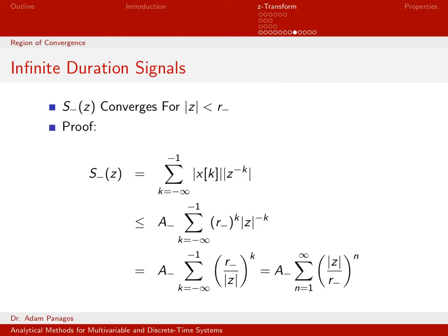Since n is negative k: when k is minus infinity, n is infinity; when k is minus 1, n is 1. Instead of k in the exponent, I have negative n, which is the same as flipping the base — giving us a standard geometric sum.